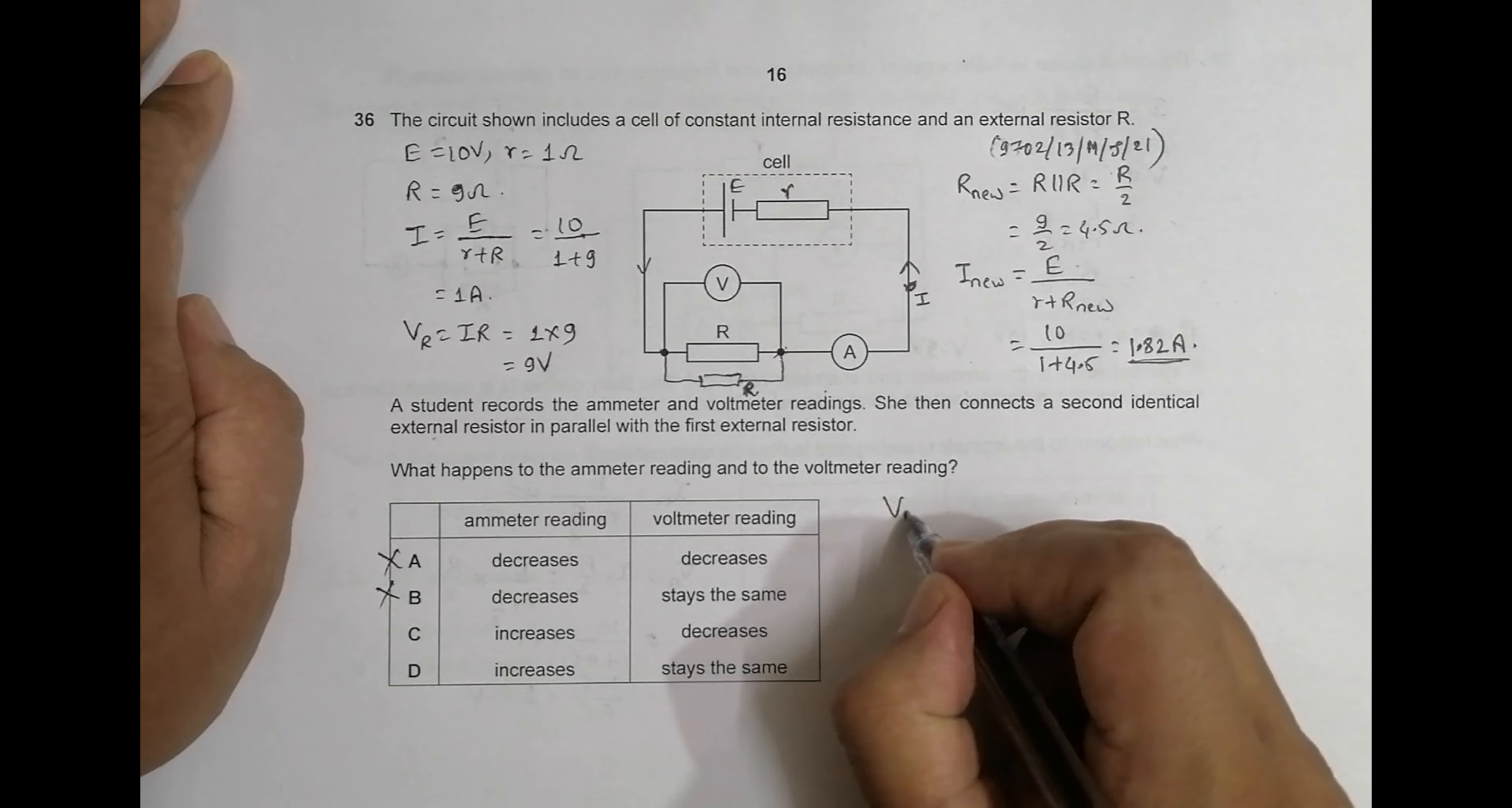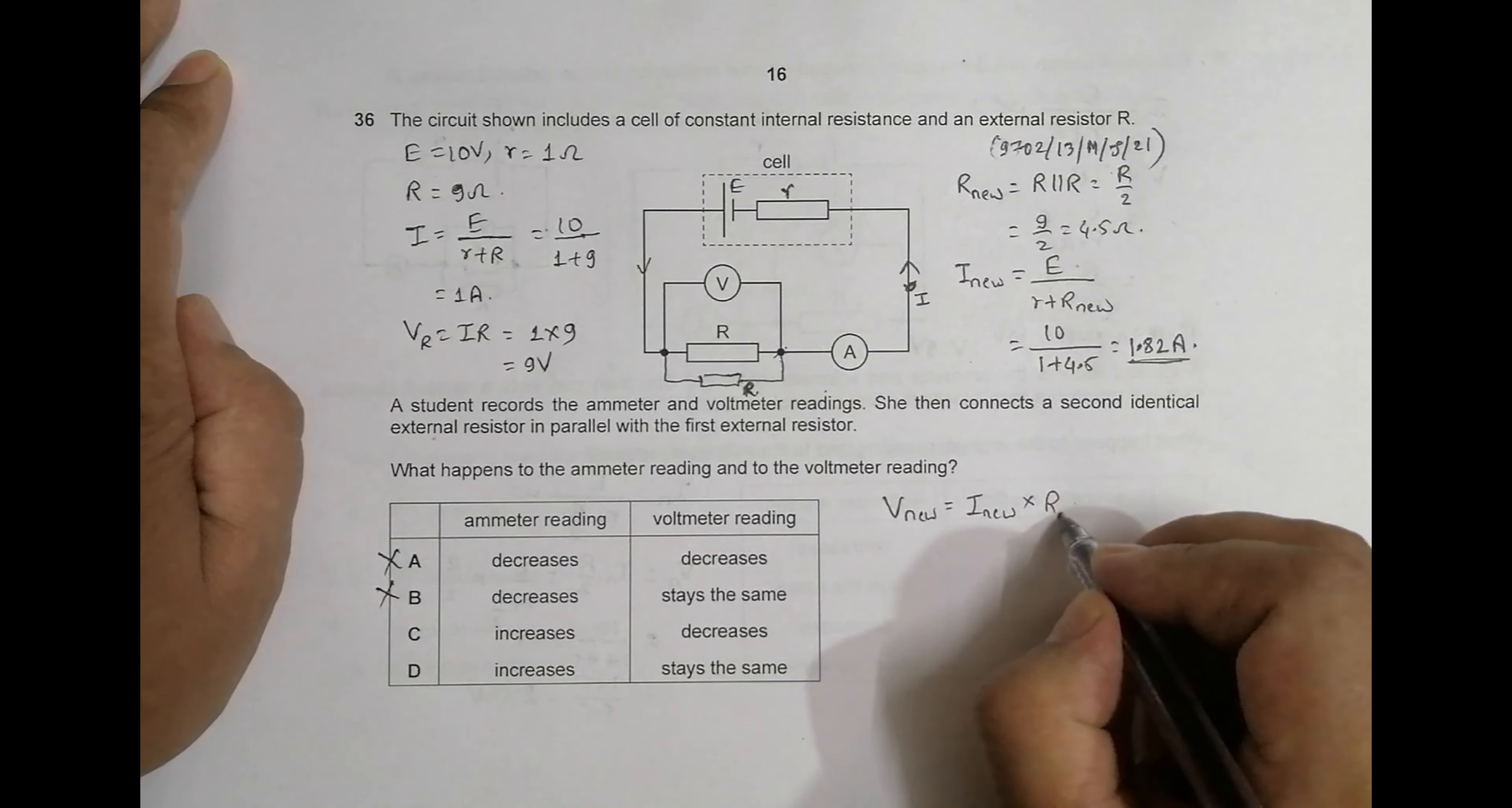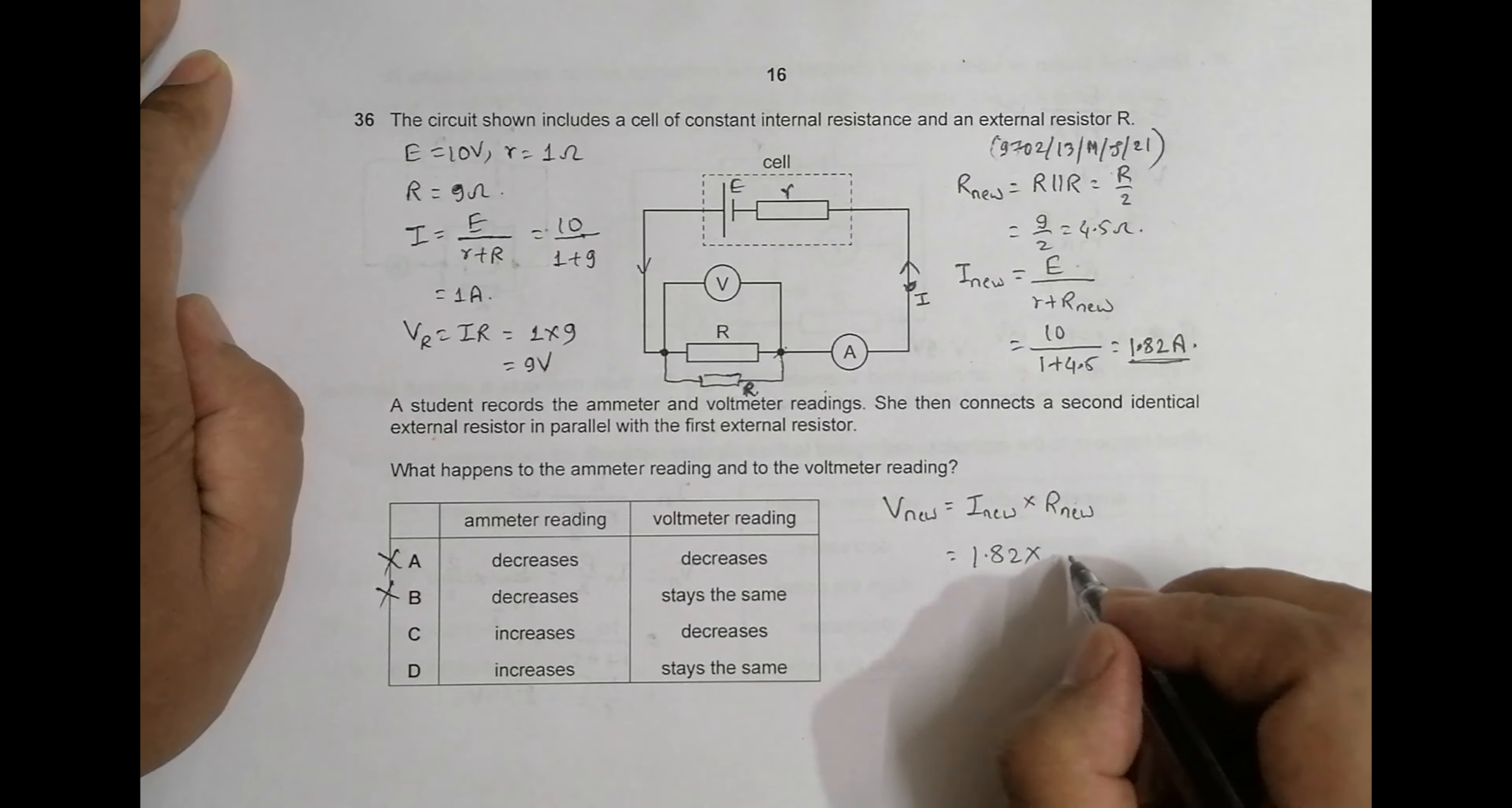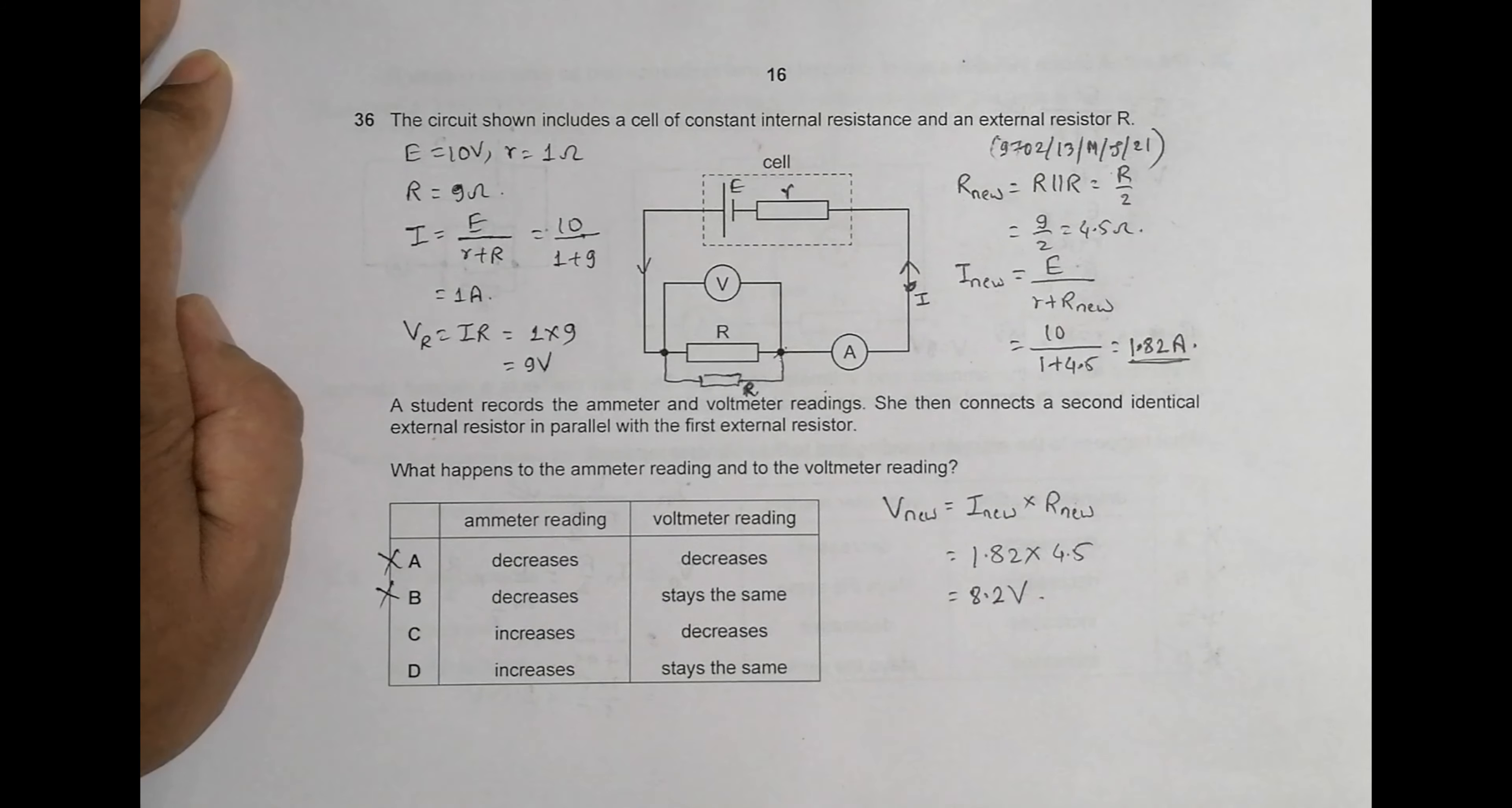Now what about the new voltmeter reading? So V_new will be equal to I_new times the total resistance, which is R_new. That will be equal to 1.82 times 4.5, which equals 8.18, which is 8.2 volts.